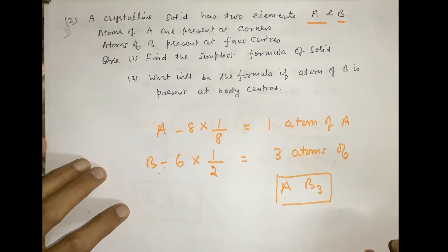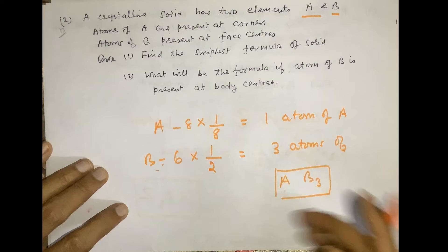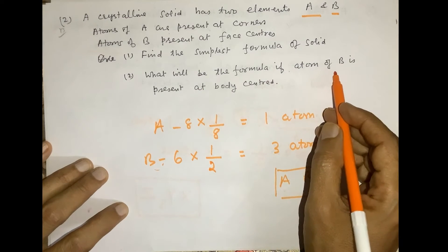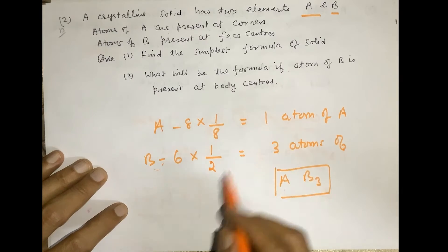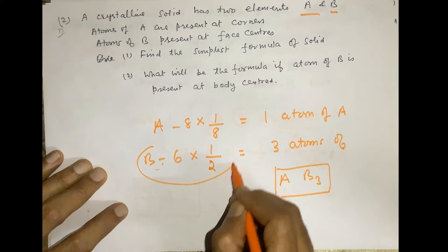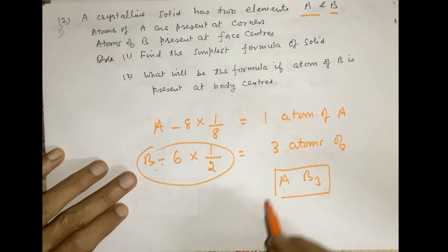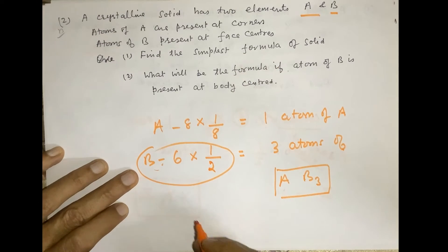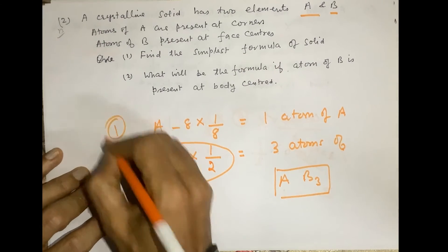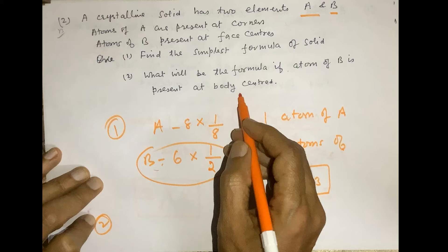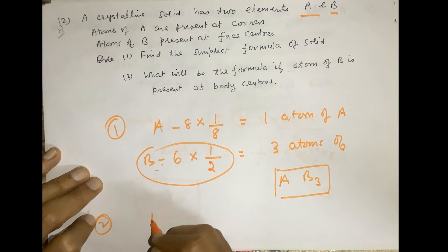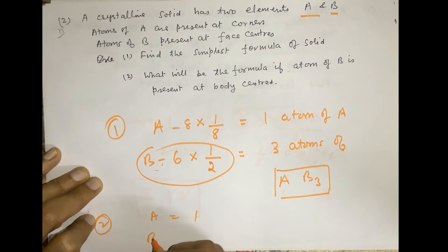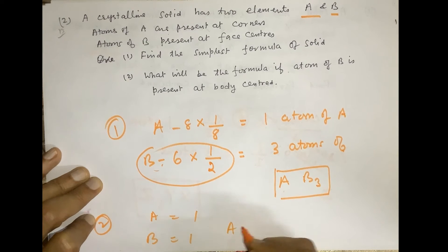The second situation: what will be the formula if atom B is present at the body center instead of face center? The body center is independent and shared by only one unit cell, so B = 1. With A = 1 from corners, the formula becomes AB.